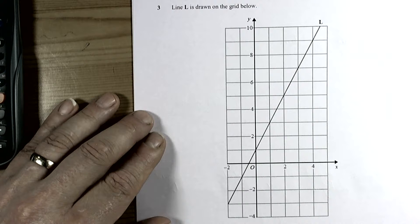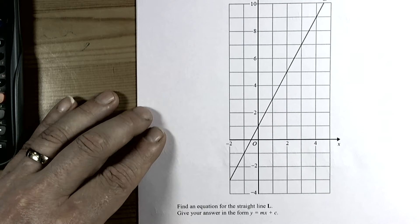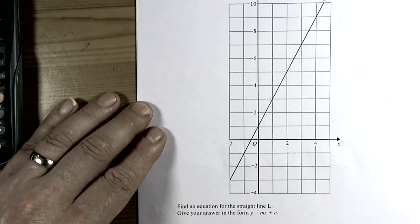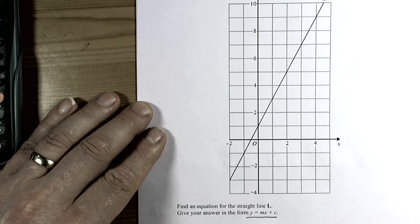This question shows a straight line drawn on a graph and asks us to calculate the equation of the line. It says give your answer in the form y equals mx plus c, so it's given us a hint that we're working with this general formula for the equation of a straight line.